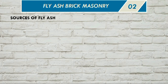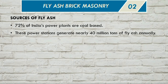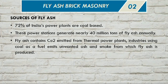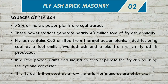The source of fly ash is generally thermal power plants. Power stations may generate around 40 million tonnes of fly ash. Fly ash is a carbon dioxide byproduct from thermal power plants and industry, where coal is used as fuel, producing unwanted ash and smoke — this is the fly ash. In the industry, fly ash is separated using a cyclone converter, and this fly ash is used as raw material for bricks.